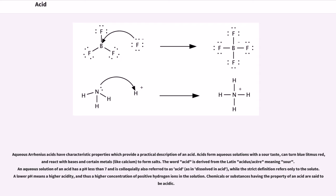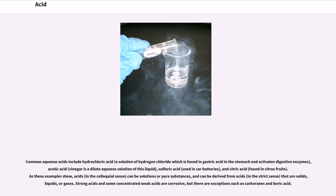Chemicals or substances having the property of an acid are said to be acidic. Common aqueous acids include hydrochloric acid, a solution of hydrogen chloride which is found in gastric acid in the stomach and activates digestive enzymes; acetic acid—vinegar is a dilute aqueous solution of this liquid; sulfuric acid, used in car batteries; and citric acid found in citrus fruits.